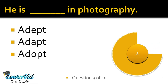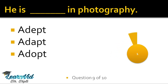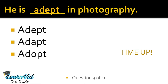He is dash in photography. The correct option is A-D-E-P-T, adept — meaning skilled, a well-trained person who is very proficient in their work. He is adept in photography. Second is A-D-A-P-T, adapt — which means to adjust to a new condition, to make fit for a new situation. And the last one is A-D-O-P-T, adopt — which has two meanings: to adopt a child, like he adopted a girl child; and also to take up or follow something.